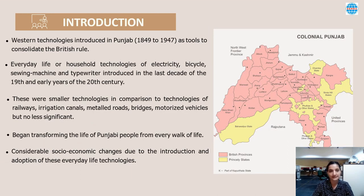Coming to the introduction: the province of Punjab was annexed politically and administratively by the British in March 1849, and immediately after annexation, a board of administration was appointed. The board introduced far-reaching political, economic and social changes to strengthen hold over Punjab. These developments included the introduction of many Western technologies, and among these were everyday life or household technologies of electricity, bicycles, sewing machine and typewriters. Although these were small technologies compared to railways, metal roads and bridges, they nevertheless significantly transformed the life of Punjabi people from every walk of life. The impact created by these technological interventions needs to be given importance as a positive aspect of colonialism.